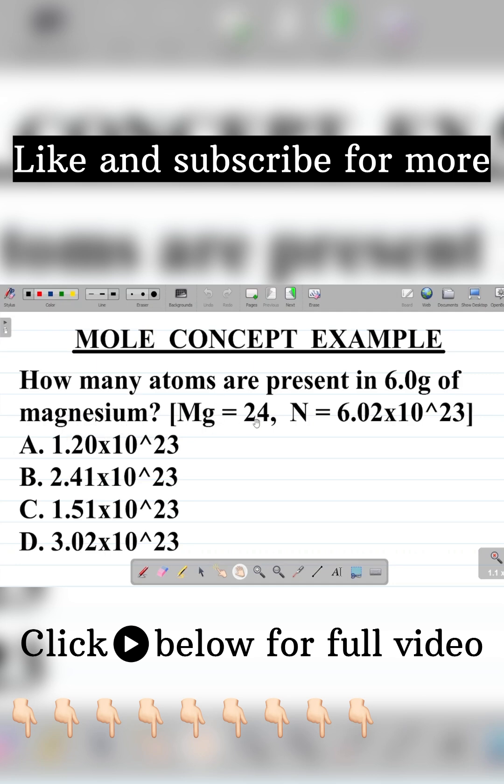You're given Mg equal to 24. What you have here is the atomic mass of magnesium. You're given N equal to 6.02 times 10 to the power 23. What you have here is Avogadro's number or Avogadro's constant.